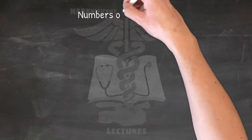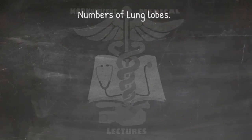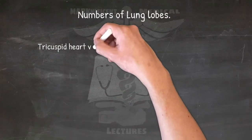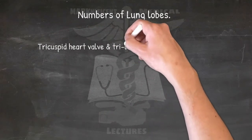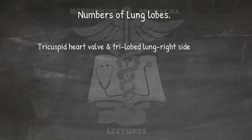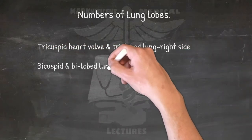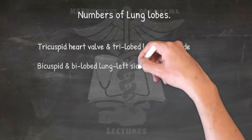For the number of lung lobes — right versus left: the tricuspid heart valve and the tri-lobed lung are both on the right side; the bicuspid and bi-lobed lung are both on the left side.